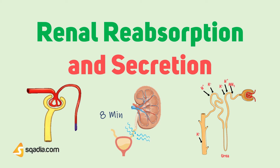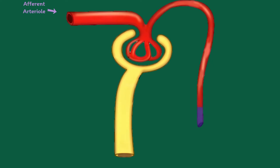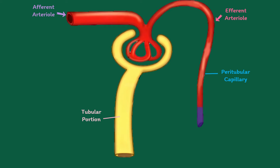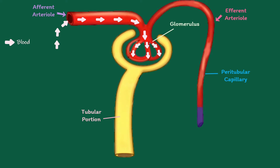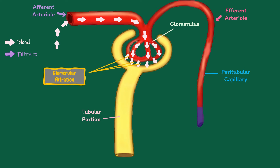Let's understand the summary of urine formation. This is afferent arteriole. This is efferent arteriole. This is peritubular capillary. This is tubular portion. This is glomerulus. When blood passes through glomerulus capillaries, the plasma is filtered into the Bowman capsule. This process is called as glomerular filtration.